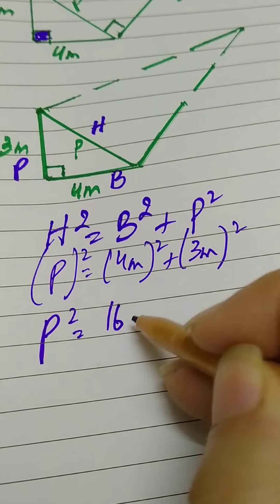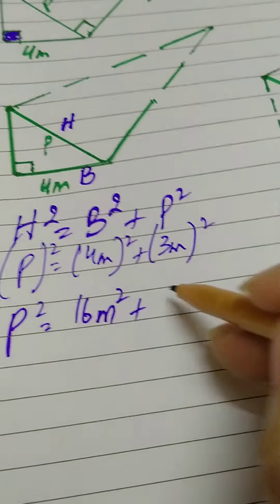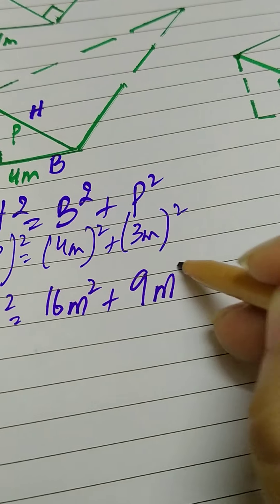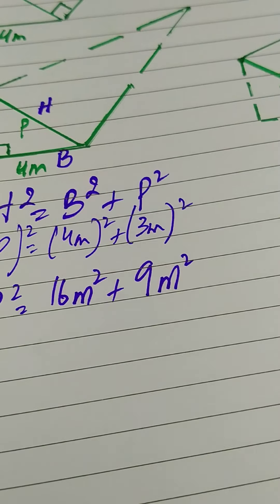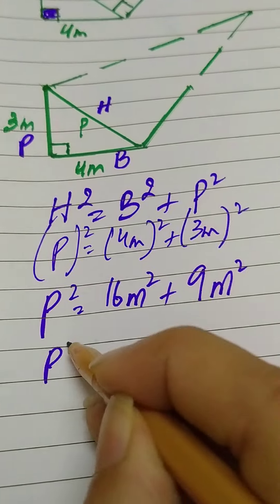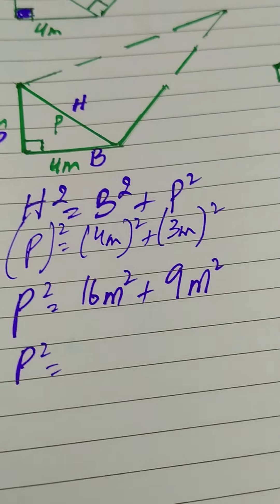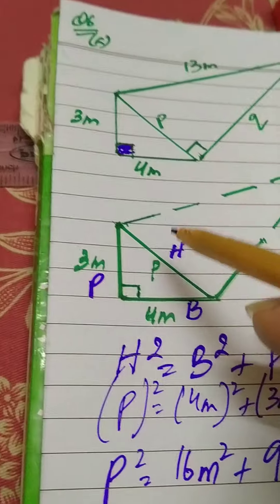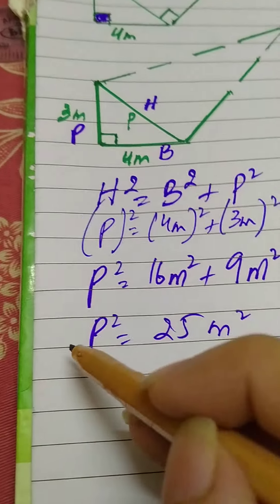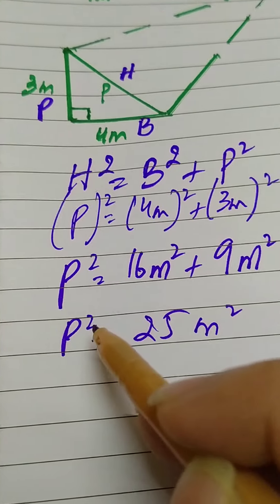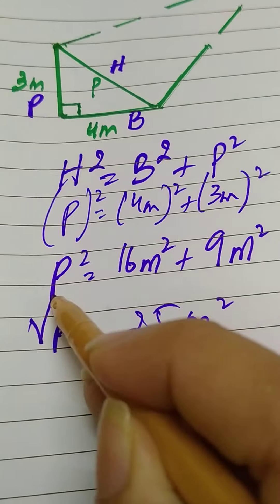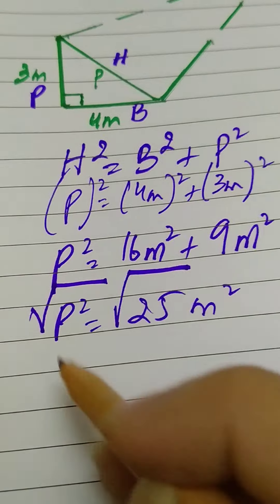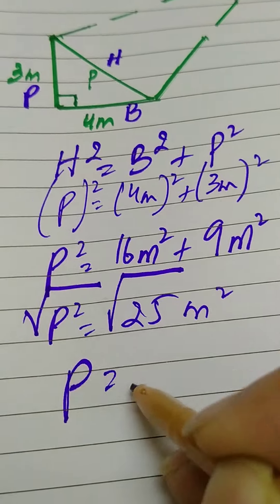So p² = 4² + 3² = 16 + 9 = 25 square meters. But we need p, not p squared, so we take the square root of both sides. Therefore, p = 5 meters.